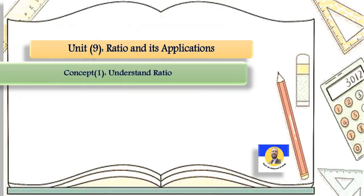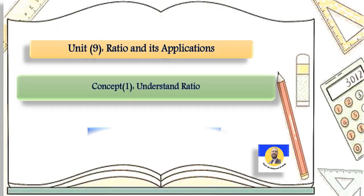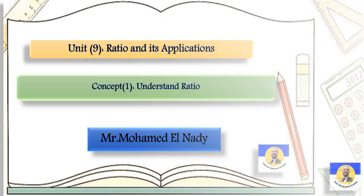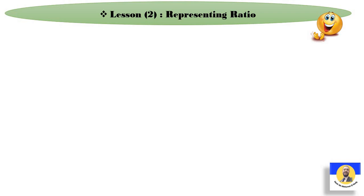السلام عليكم ورحمة الله وبركاته, welcome Primary 6 students with Mr. Mohamed Al-Nadi. Today inshallah we'll complete ratio and its applications, concept one: understand ratio, lesson two: representing ratio. We reviewed the definition of ratio - comparing between two quantities - and learned which comparisons can be ratios. We saw the three ways to write ratios: with two dots, the word 'to', or as a fraction. Now we'll learn how to complete ratios, which we'll work on in lessons two, three, and four.